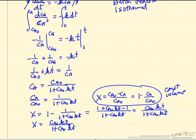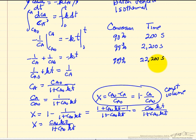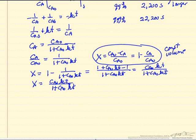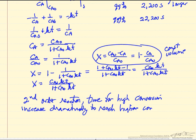Calculating conversion for the second-order case: for 90%, it's still 200 seconds — the same as first order, by design. But for 99%, it takes 10 times as long. And for 99.9%, it takes 10 times as long again — so 100 times longer than the 90% case. To convert that next 9% after already being at 90% takes 10 times longer; to convert the next 0.9% takes 100 times longer. This is a dramatic difference compared to first order.